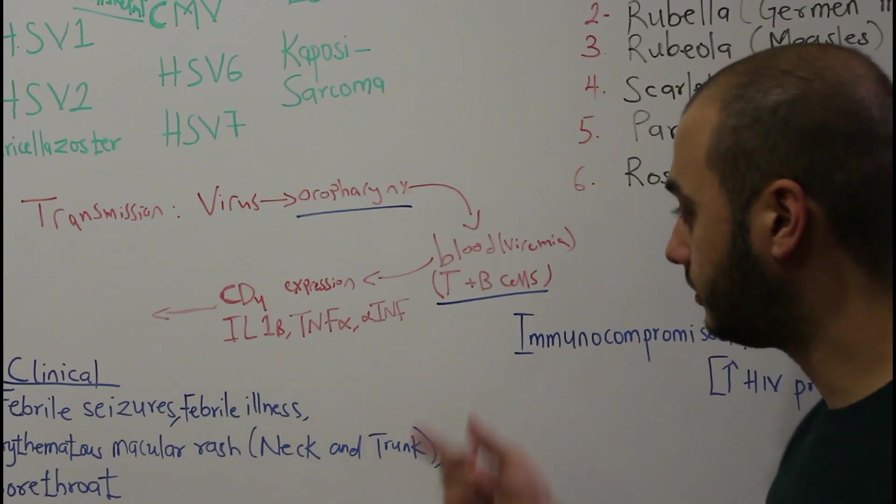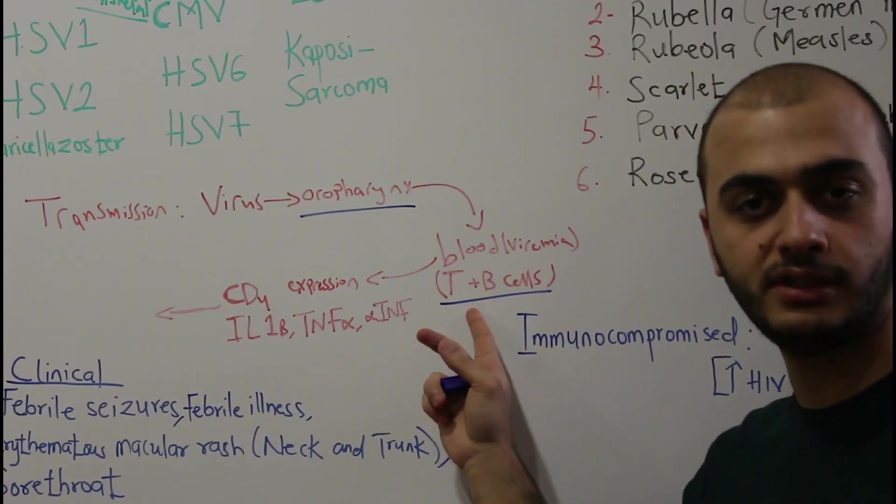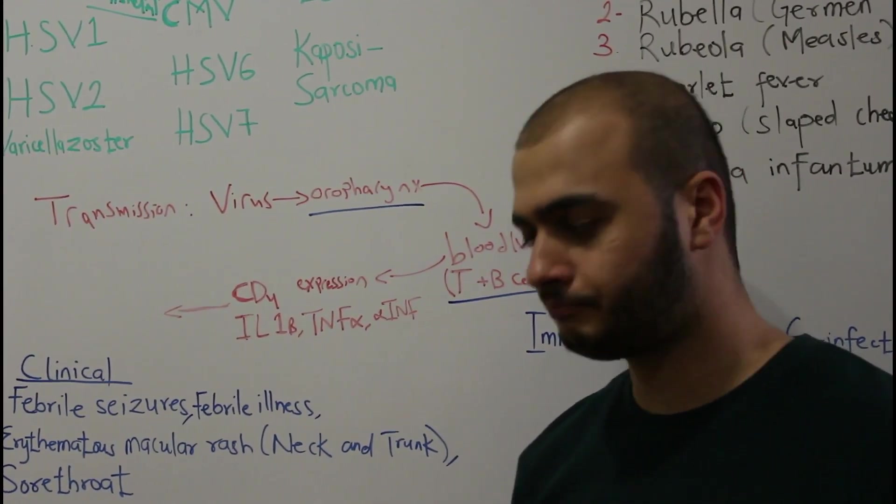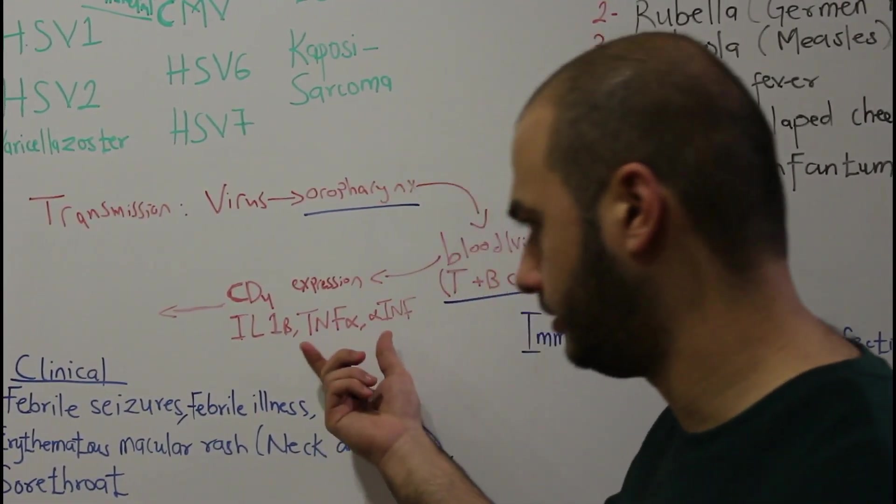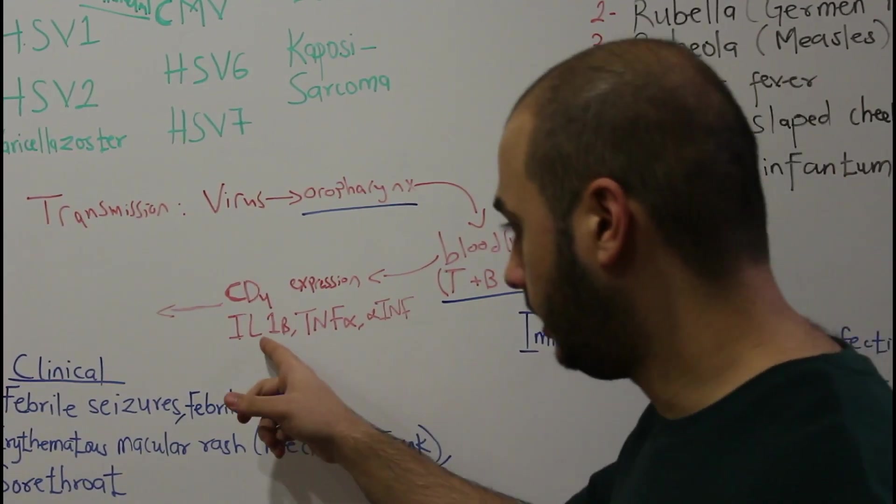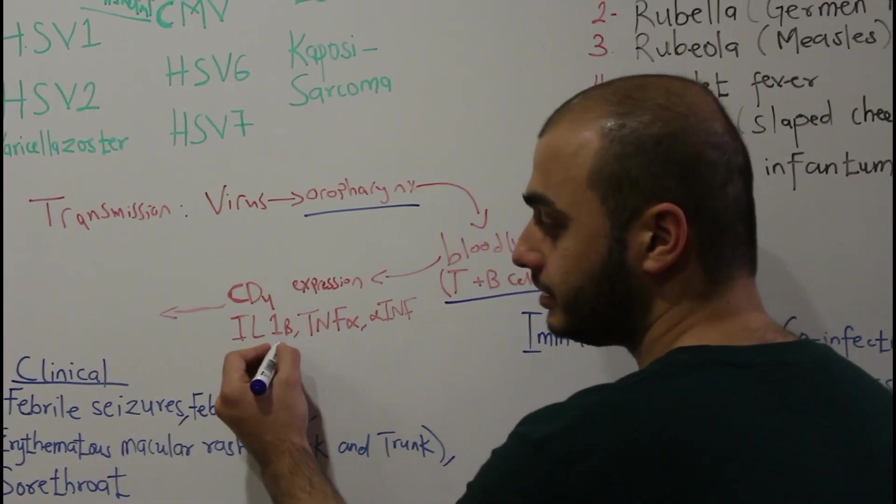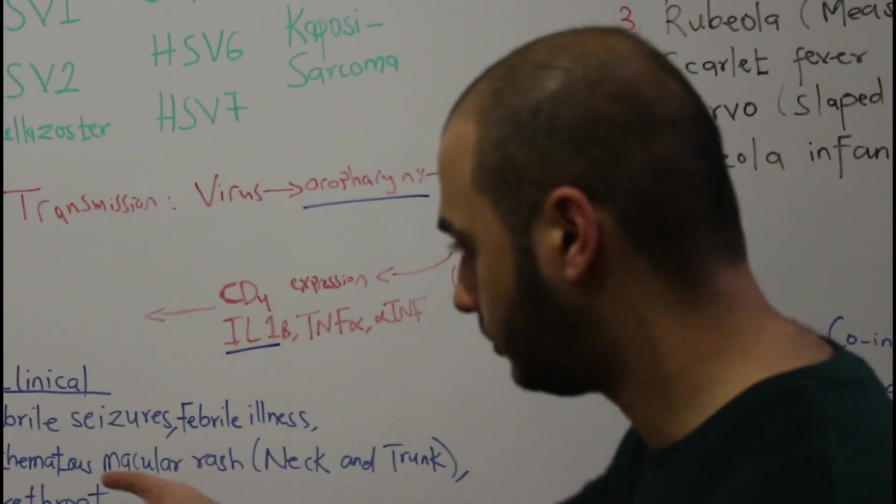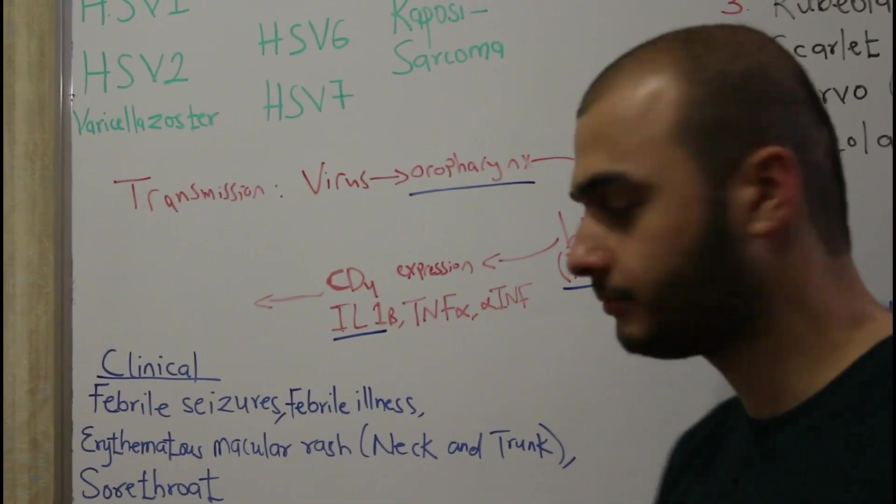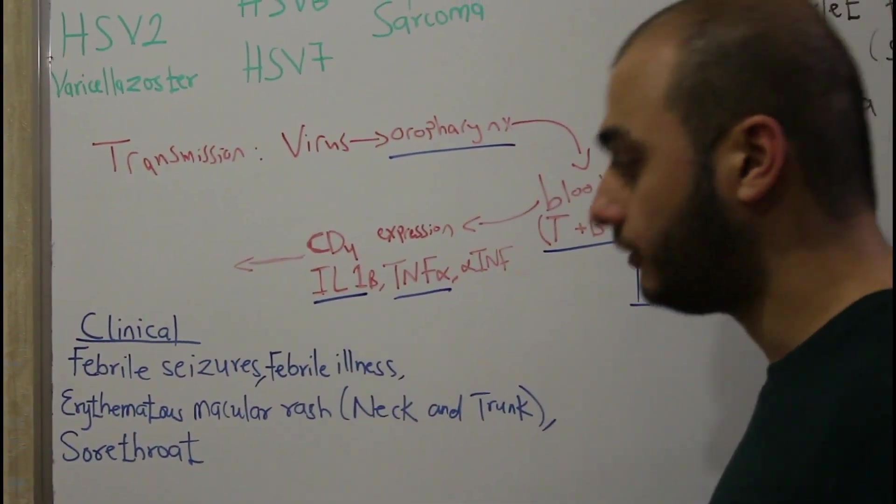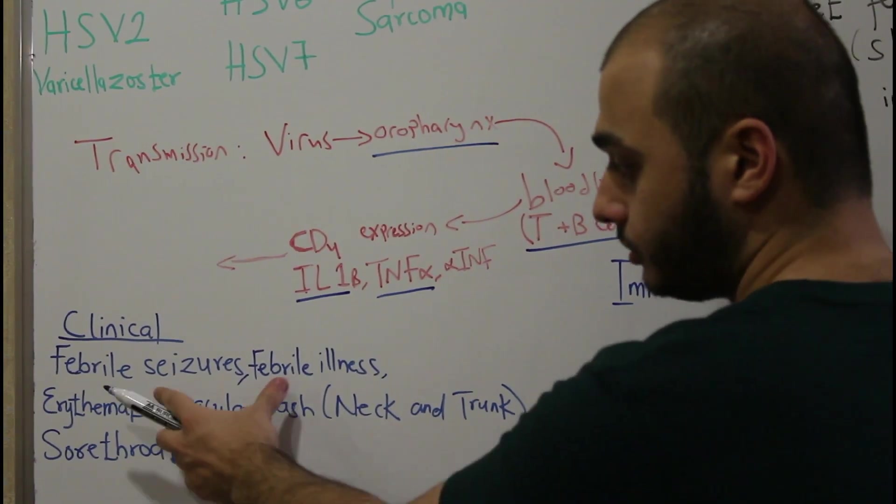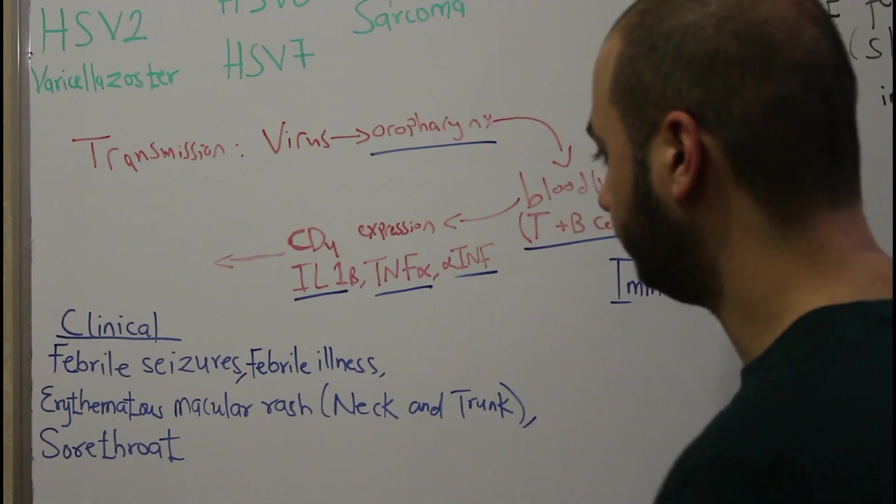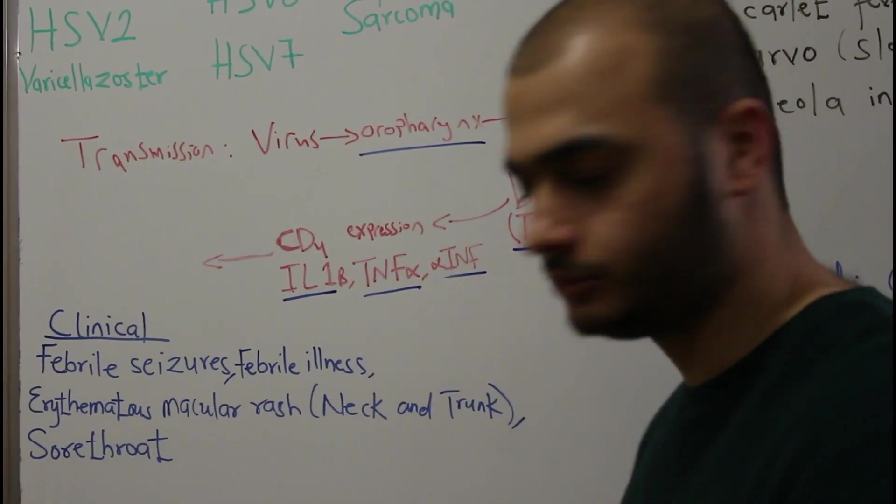Inside the blood they mainly affect T and B cells, which make a powerful immune response against them. This results in release of interleukin-1B, which is responsible for temperature, so you will see febrile illness and febrile seizures. Tumor necrosis factor alpha is also responsible for high temperature, and alpha interferon is released against the viruses.